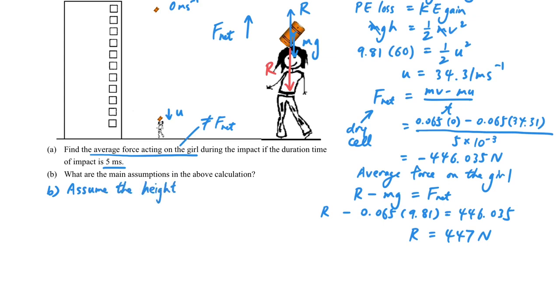And then what are the assumptions we have made? So far, we have made some assumptions. Firstly, we have neglected the height of the girl, and then we also assume the air resistance is negligible.